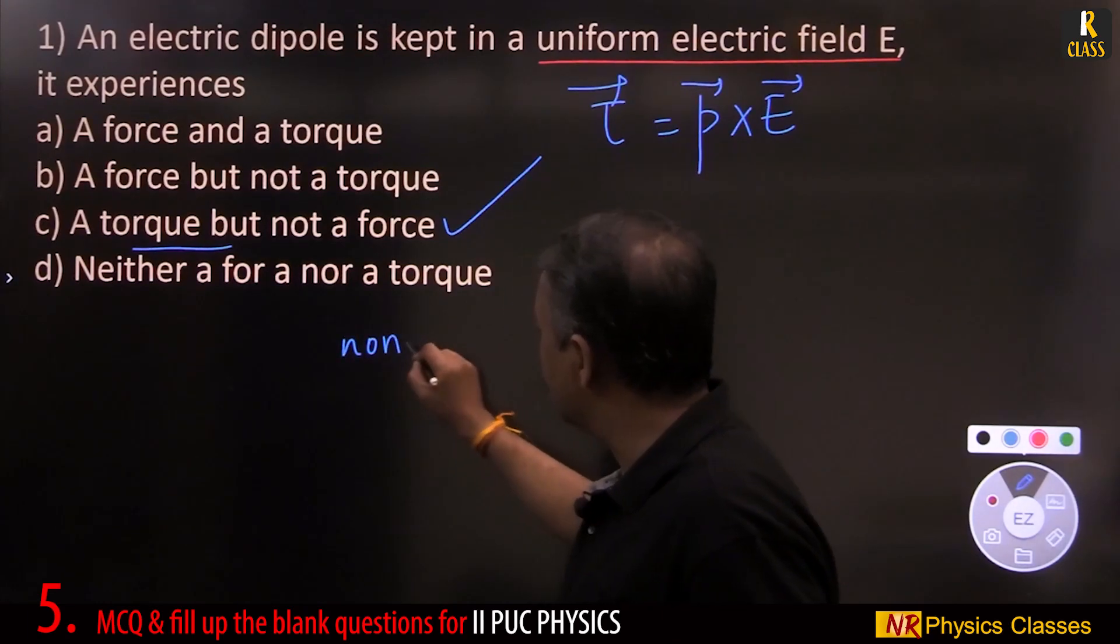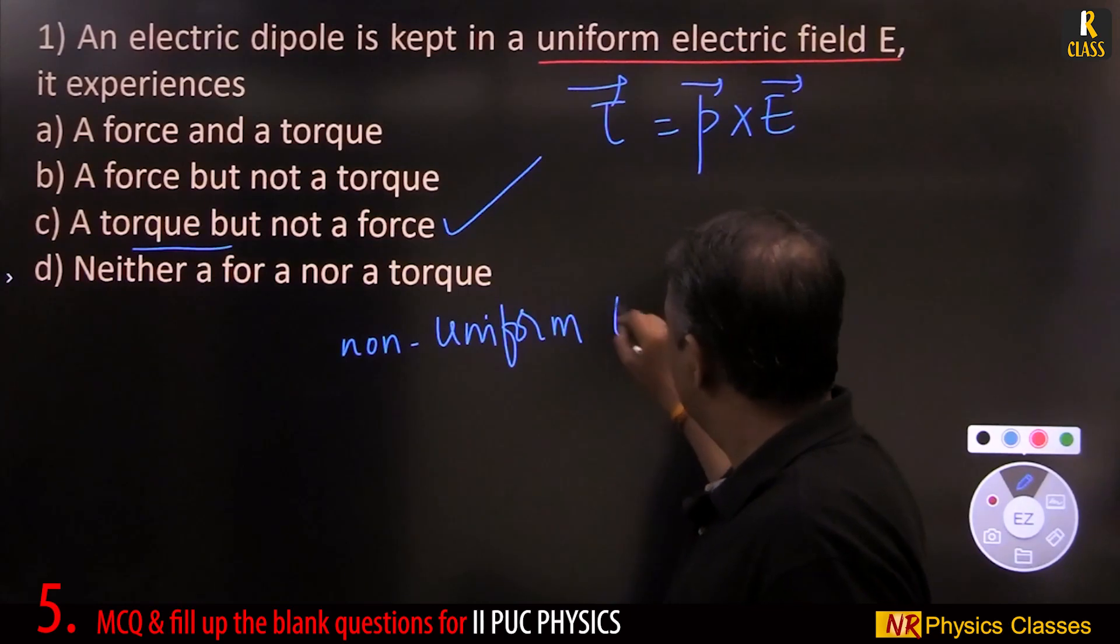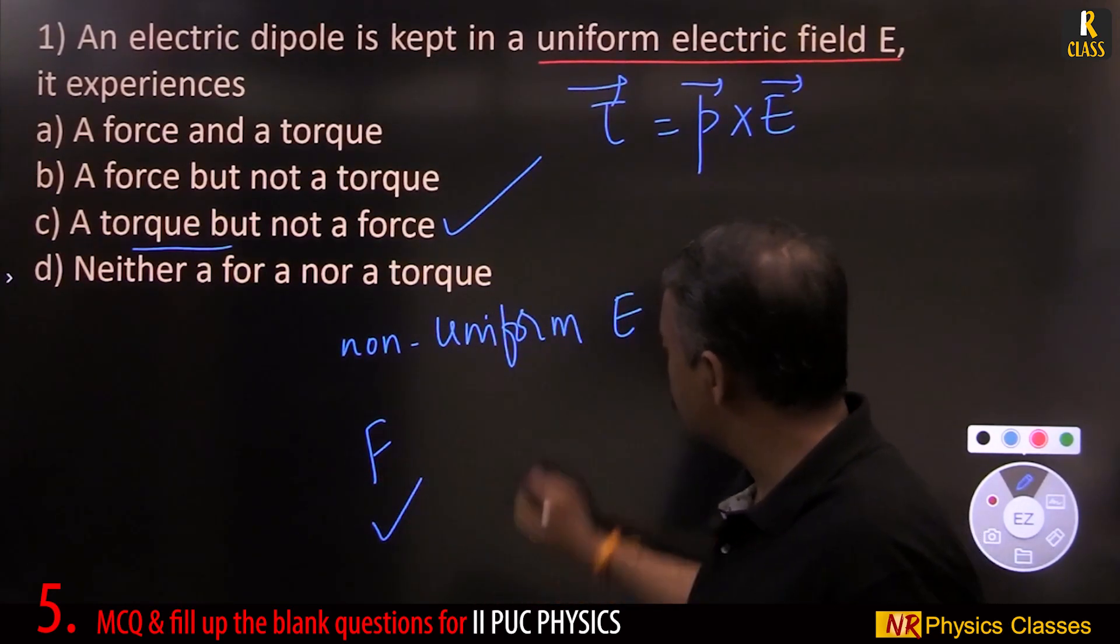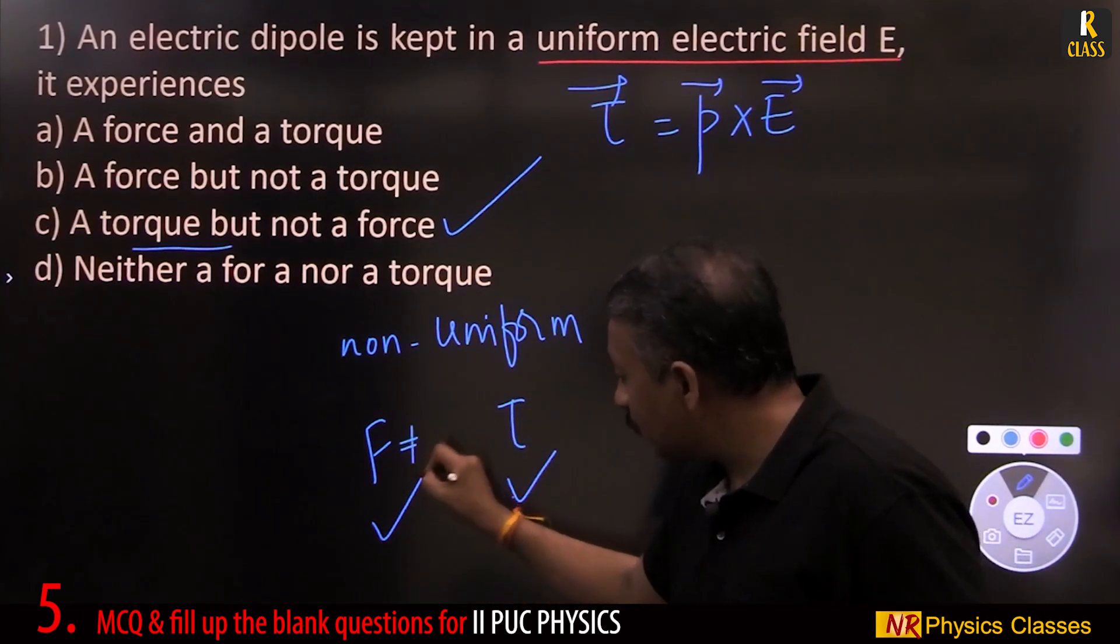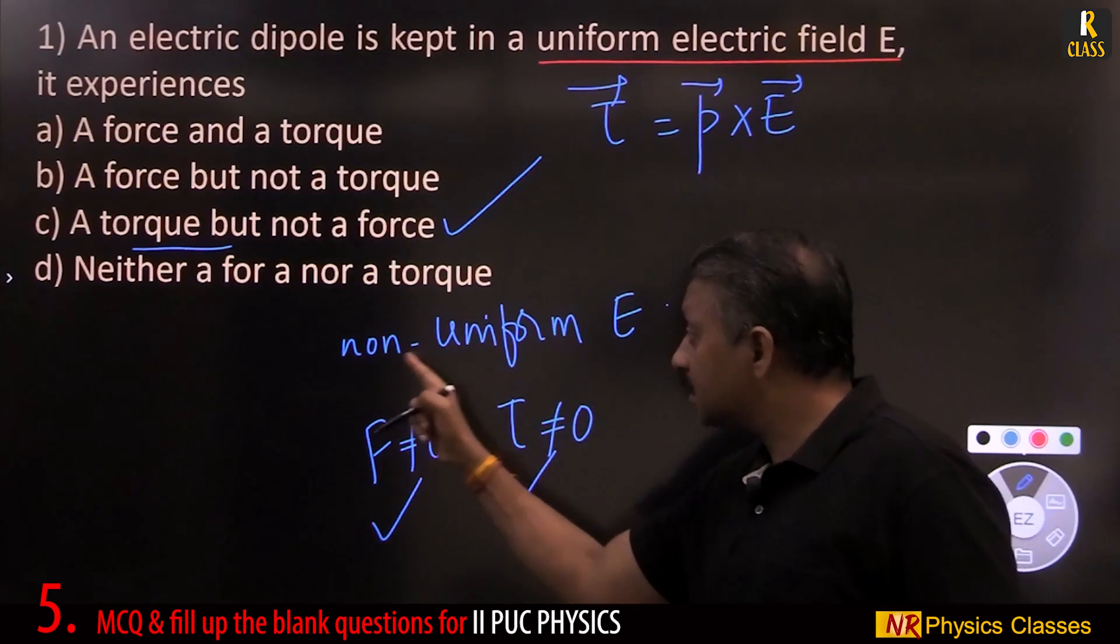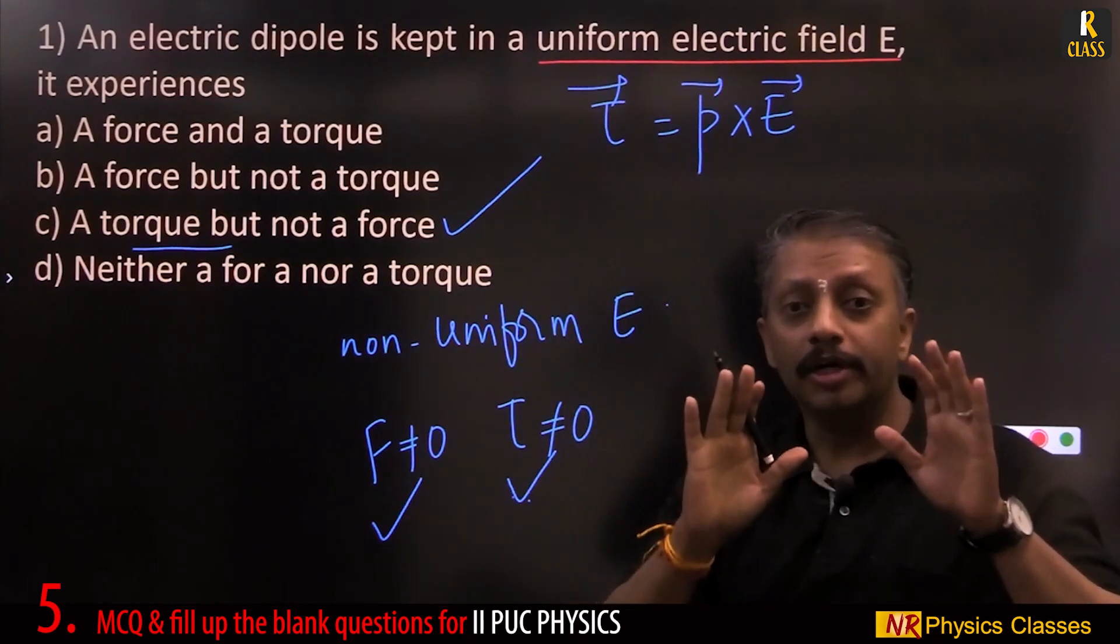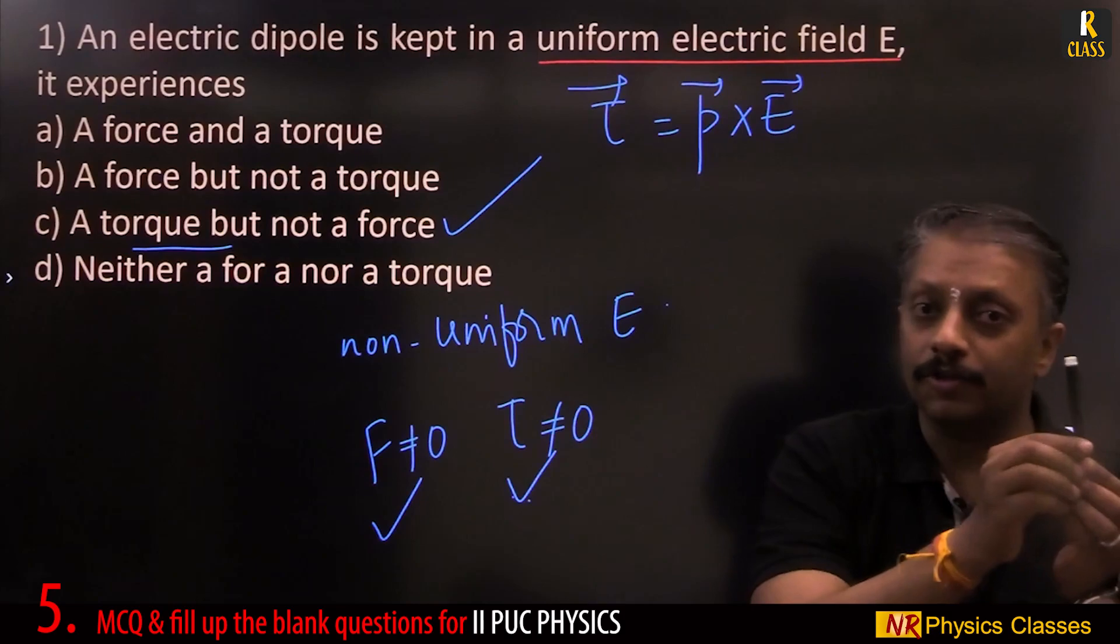If it is non-uniform electric field, then force is there, resultant force, and torque is also present. Force not equal to zero, torque also not equal to zero. That is non-uniform electric field. Uniform electric field, only torque. There is only rotation but no translatory motion.